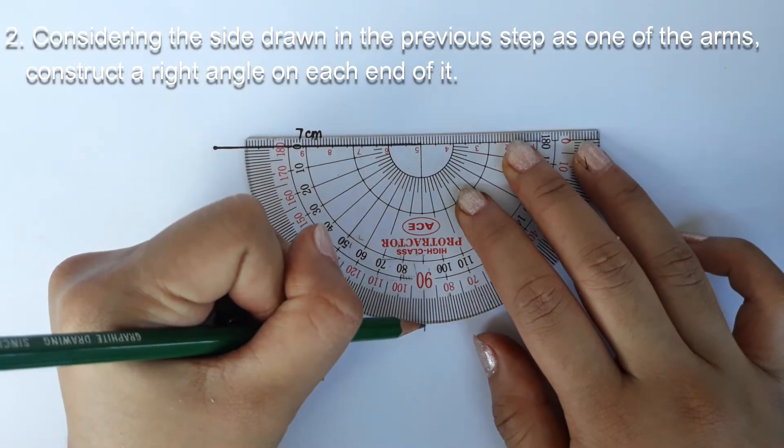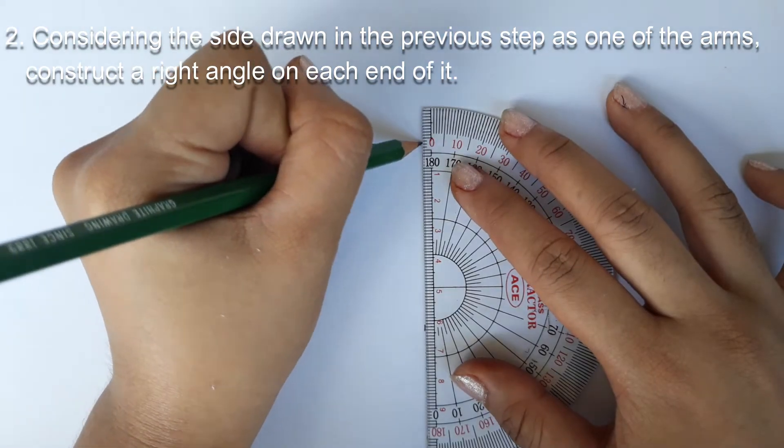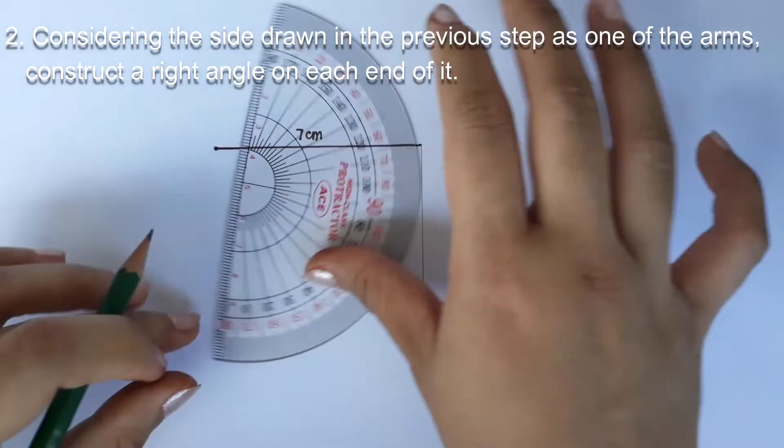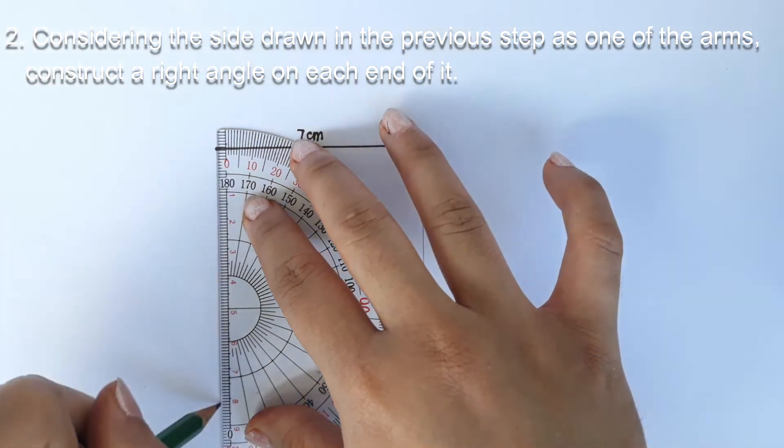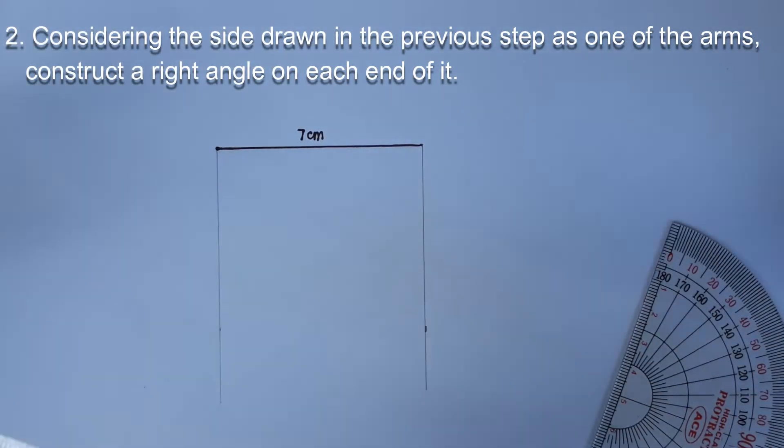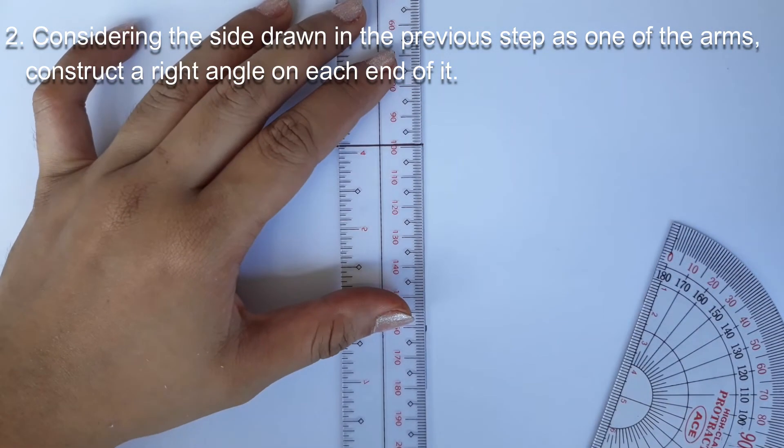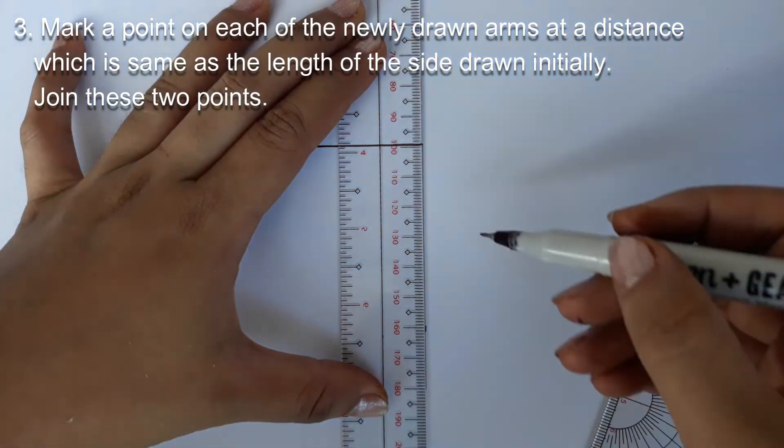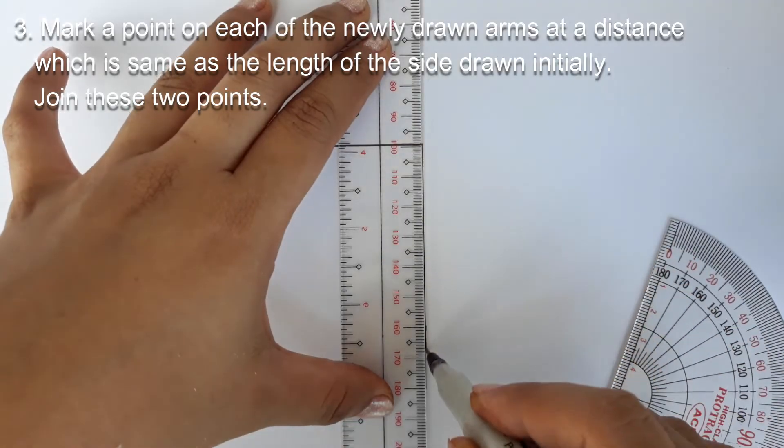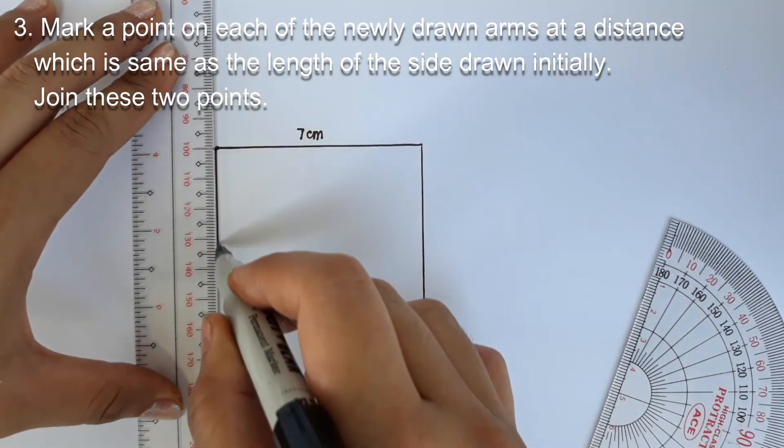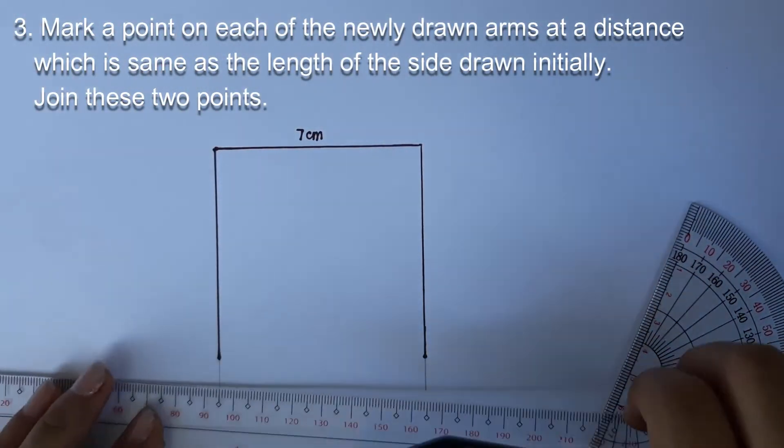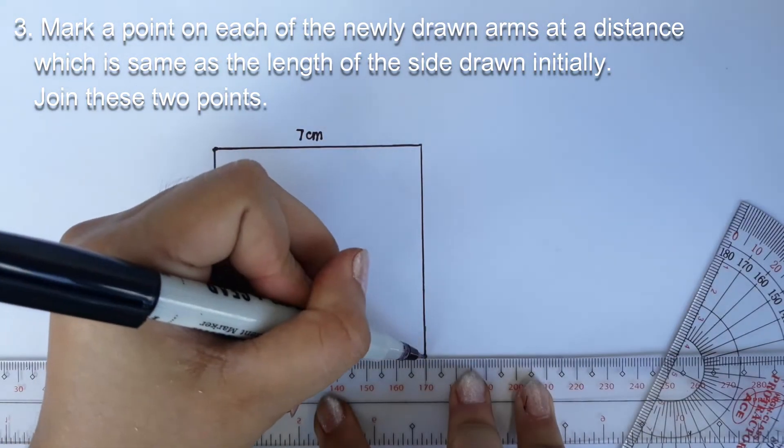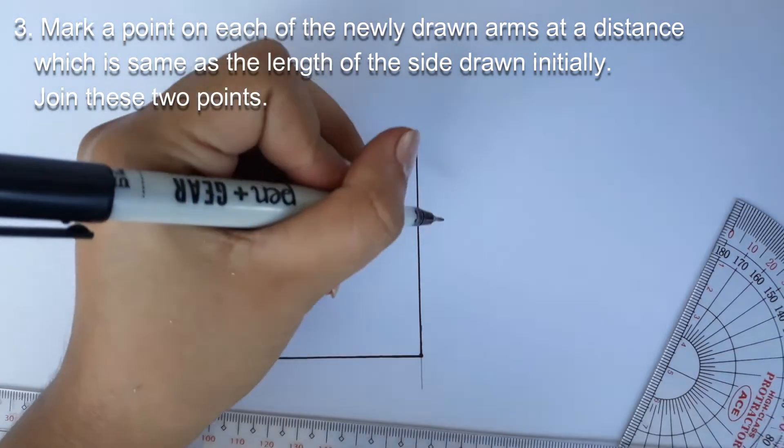Step 2. Considering the side shown in the previous step as one of the arms, construct a right angle on each end of it. Step 3. Mark a point on each of the newly drawn arms of the two right angles at a distance measured from the respective vertex of the right angle which is the same as the length of the side drawn initially.